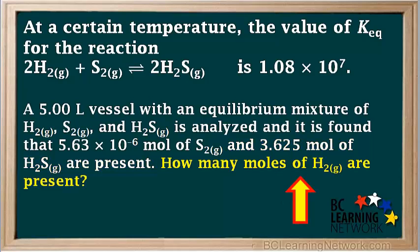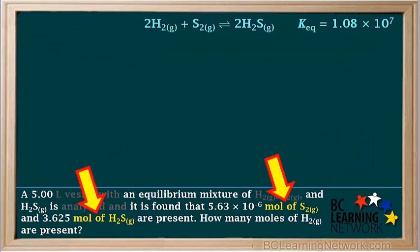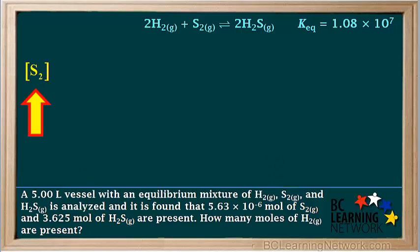The question asks how many moles of H₂ gas are present in the same equilibrium mixture. Notice that we're given the moles of S₂ and H₂S. The equilibrium constant expression, which we'll use for this problem, relates molar concentrations of species rather than moles. So we must change the moles of S₂ and H₂S to molar concentrations.